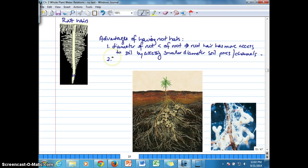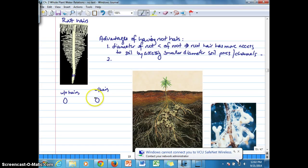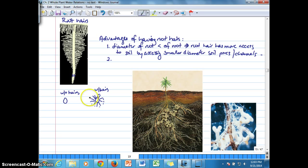The second advantage here is that if we take a cross-section through the diameter of the root, we're comparing a plant without root hairs versus the diameter with hairs. That diameter, meaning the contact between the root and soil when there's no root hairs, is much less than if we draw these root hairs out here.